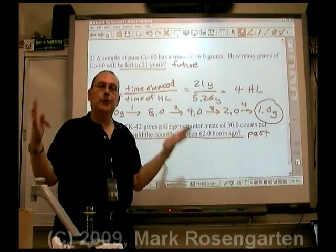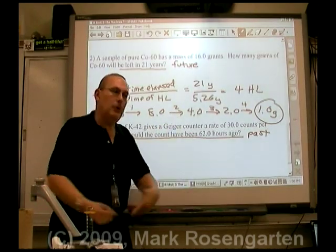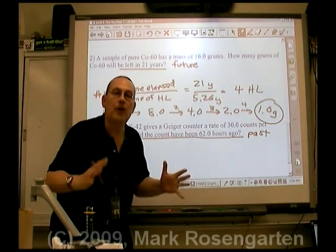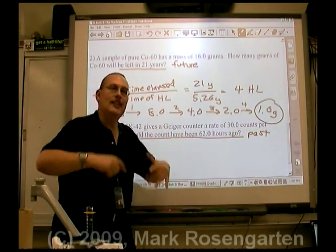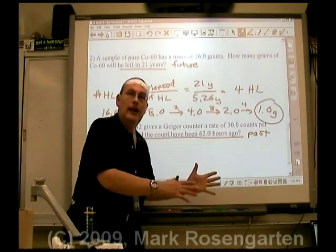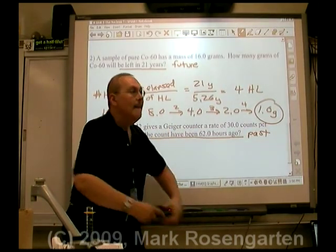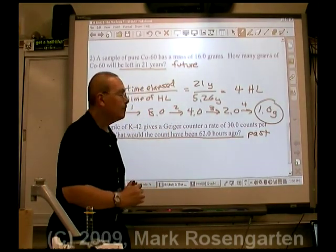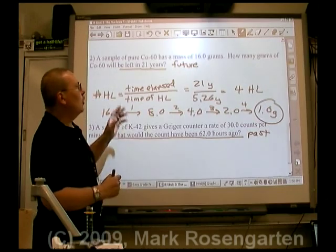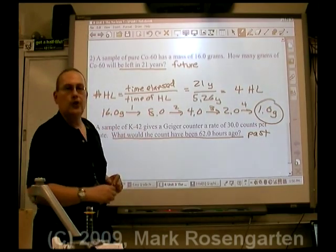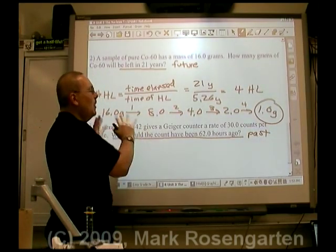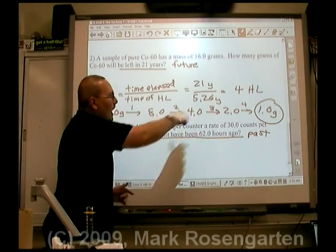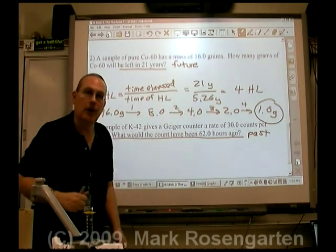What about the other 15 grams? Those are the daughter nuclide — the cobalt-60 is changing into a new element. So the remaining 15 grams is that new element. Going into the future, you cut the amount you have in half by the number of half-lives undergone.